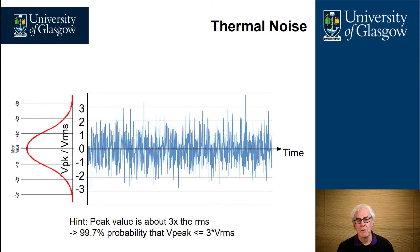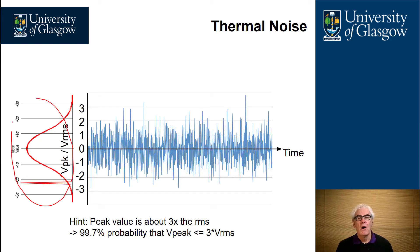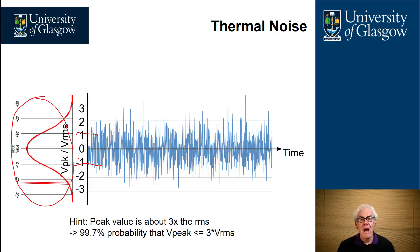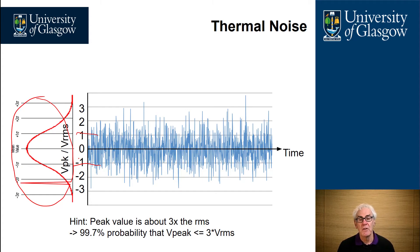This is what thermal noise looks like. It is statistical in nature — this is the distribution of the noise voltage appearing across a given resistor versus time. Most of the noise is happening between plus and minus one sigma, which is about 68%. But you can get some noise pulses peaking up to three sigma away. A good rule of thumb is that the peak value for any component is about three times the RMS noise level, and 99.7% probability means the peak is less than plus or minus three times the RMS voltage.